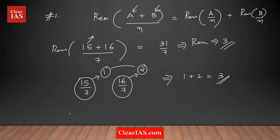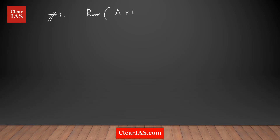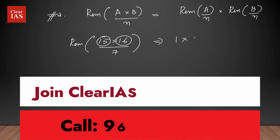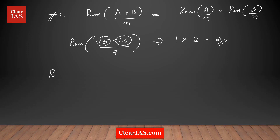Rule number 2: for a product a × b divided by n, you individually find the remainder of each number divided by n, then multiply those remainders. For example, find the remainder of 15 × 16 divided by 7. You don't need to compute the product — 15 ÷ 7 gives remainder 1, 16 ÷ 7 gives remainder 2, so the final remainder is 1 × 2 = 2.